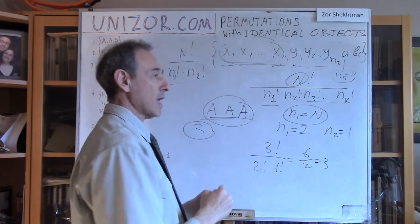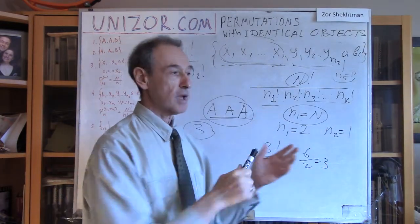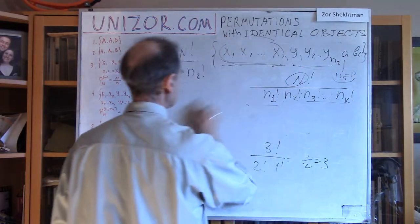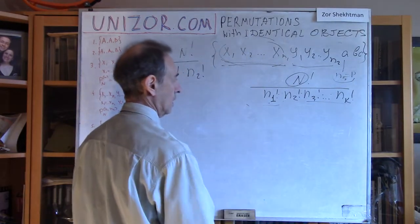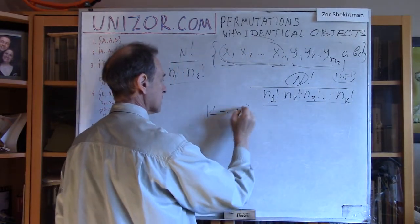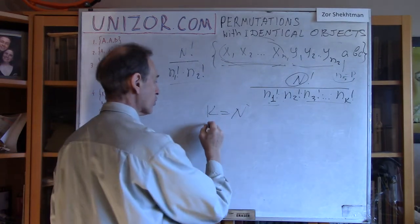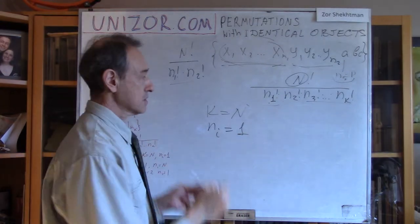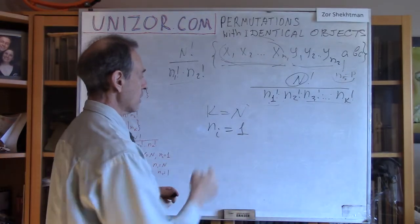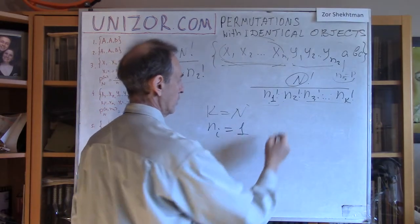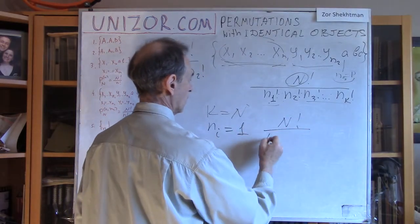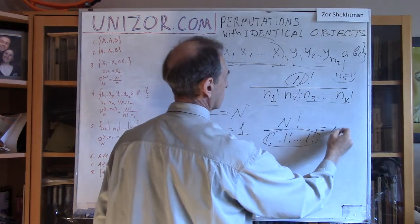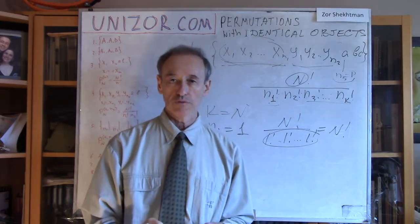Another extreme case: all elements are different. Then we have n groups, k = n, and each group contains only one element. The formula gives n factorial divided by 1! × 1! × ... × 1!, which is n factorial divided by 1, which is n factorial. This is exactly the original formula for the number of permutations of distinct objects.